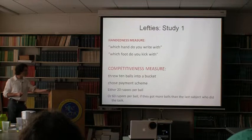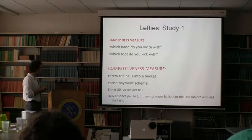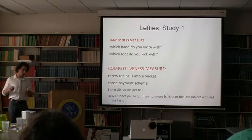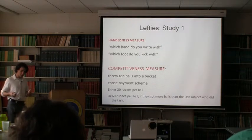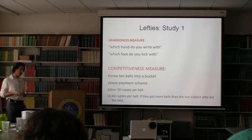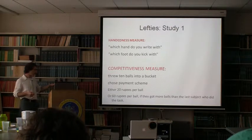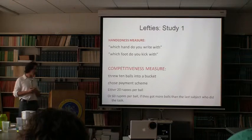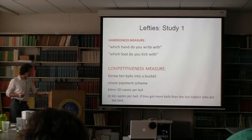In our main data: we had 1,100 villagers. We measured their competitiveness using a task where subjects throw 10 balls into a bucket and choose their payment scheme — either 20 rupees per ball fixed, or 60 rupees per ball if they get more balls than an anonymous competitor. Those who choose the competitive rate are interpreted as more competitive. We measured handedness by asking which hand they write with and which foot they kick with. All analyses give essentially the same results regardless of how the handedness measure is constructed.